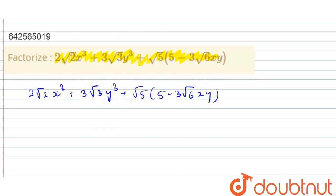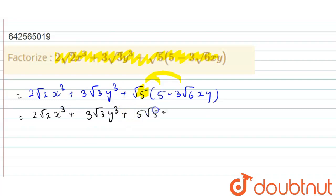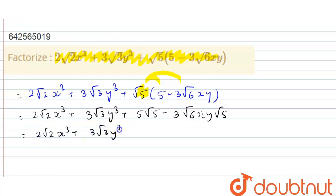I will multiply this √5 with both terms inside the bracket. So this will become 2√2 x³ + 3√3 y³ + 5√5 - 3·√6·xy·√5. If I rearrange this term, it becomes 2√2 x³ + 3√3 y³ + 5√5 - 3·√6·√5·xy.